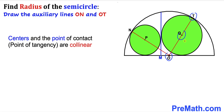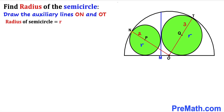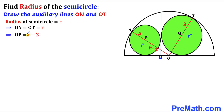Let's assume the radius of this semi-circle is lowercase r. That means radius OT equals r, and likewise ON equals r as well. Now we know that NP is the radius for the smaller green circle, which is two units. Therefore the distance OP is going to be r minus 2, so our OP length is r minus 2.